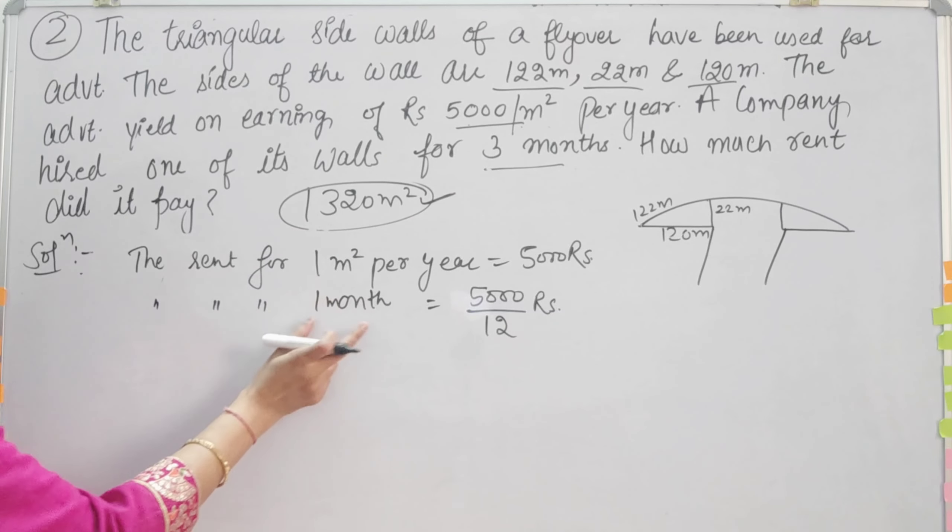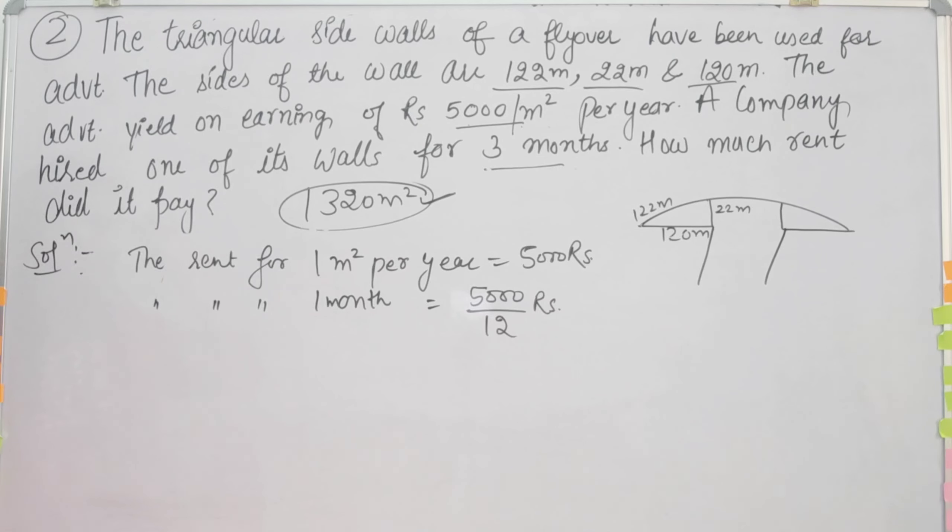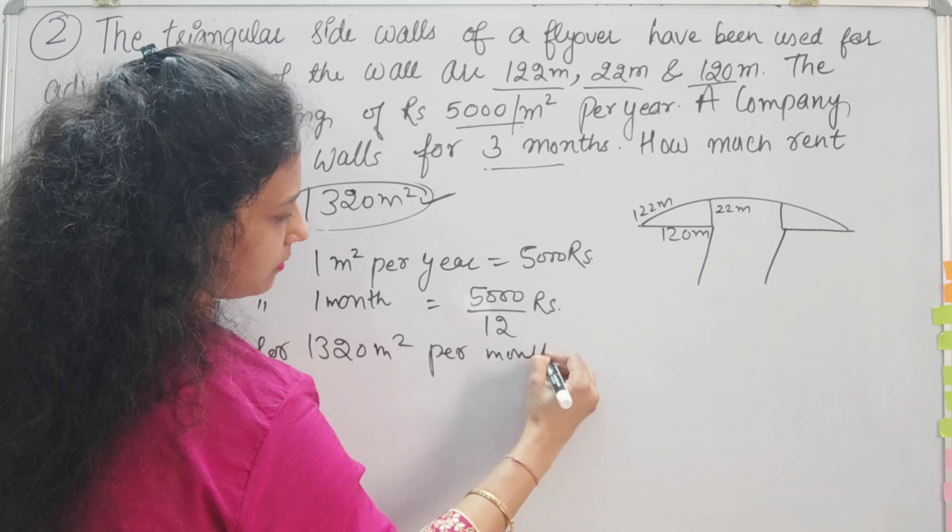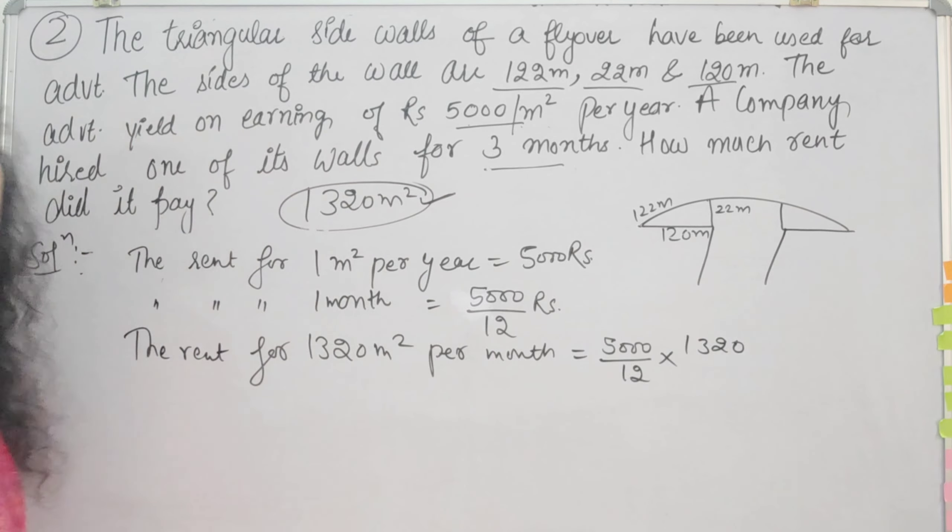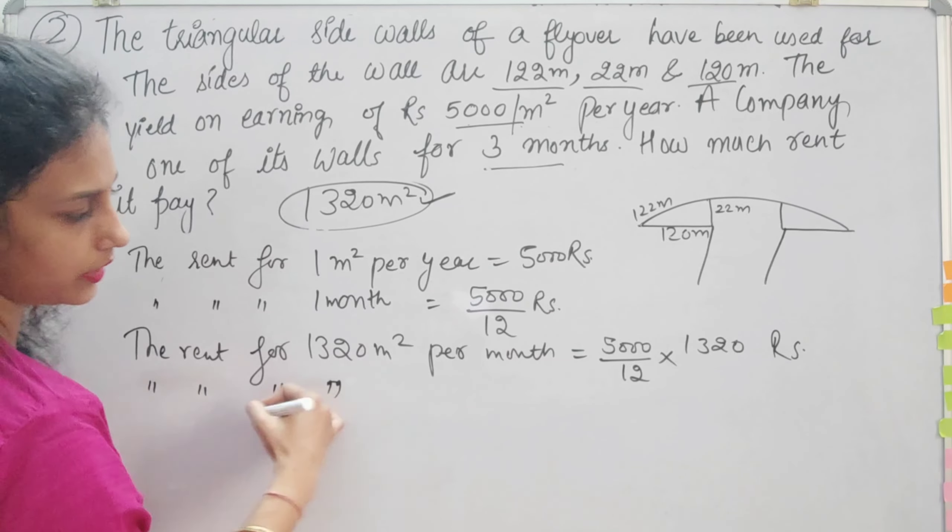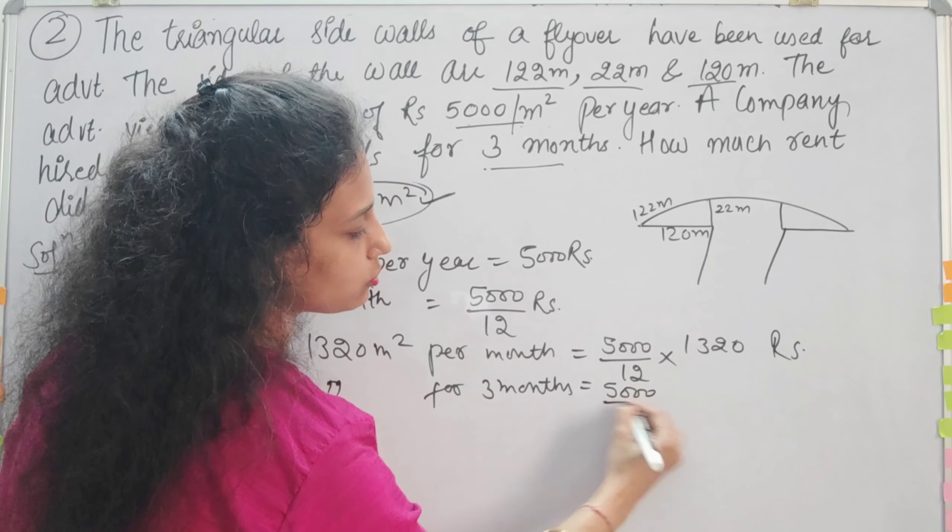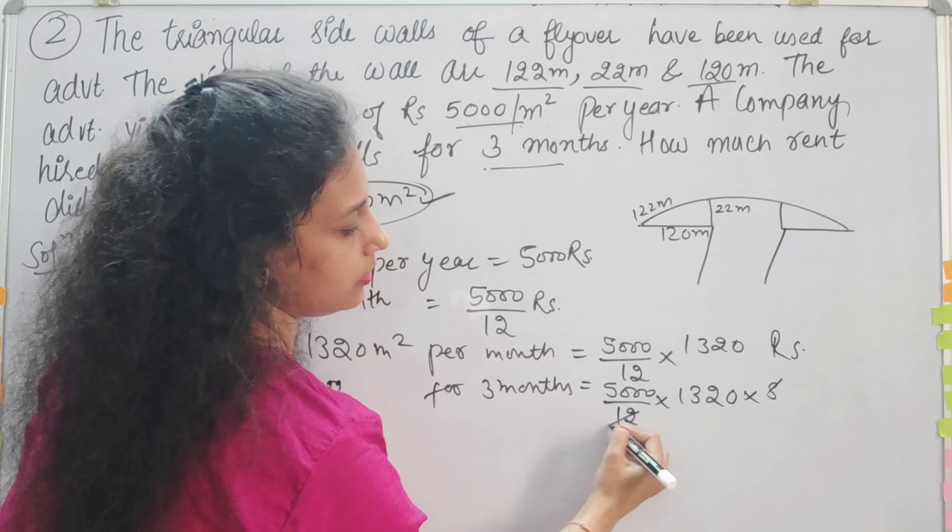For 1 meter square per month, it's 5000 divided by 12 rupees. So the rent for 1,320 meter square for 3 months will be 5,000 divided by 12, multiplied by 1,320, and multiplied by 3. The 12 and 3 cancel out, leaving us with the calculation.